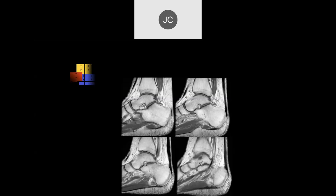The tibialis anterior tendon comes down obliquely — not in the straight sagittal plane — and inserts distally, usually involving the medial cuneiform. Here's the talus, the navicular, and the medial cuneiform where it attaches. You can see it go proximally and laterally up close to the midline.